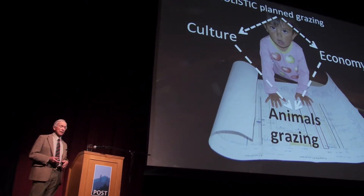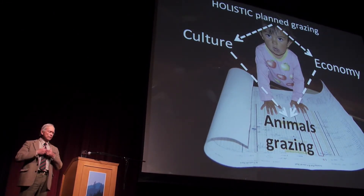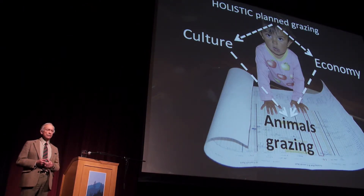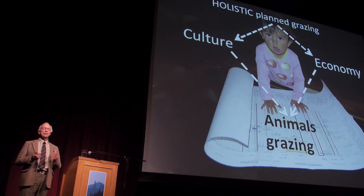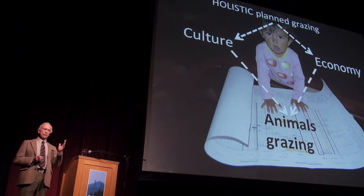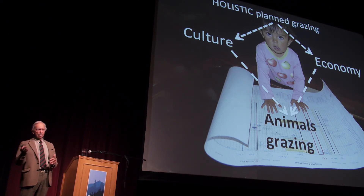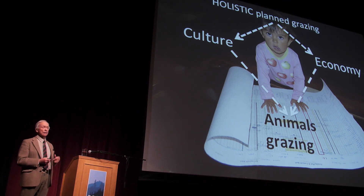We did that, and it worked immediately. We began reversing desertification. We began increasing livestock, routinely doubling the number of animals on the land, and getting immediate recovery beginning in the first year. Then, after about four years, we began to get some erratic results. Back to the drawing board — why were the results erratic? It wasn't the planning process. It was coming from social, cultural, and economic issues that we hadn't brought into the whole complexity. And that's when the word 'holistic' came into it.